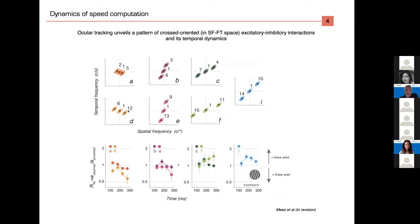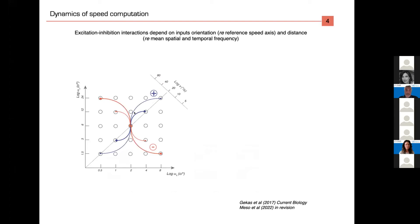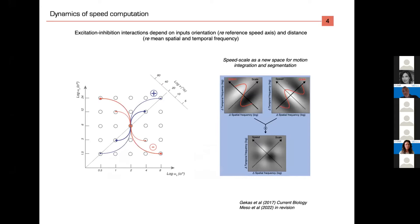To conclude: the pattern of interactions shows excitation along the iso-velocity line and inhibition anywhere else, depending on the angle of the stimuli and time — again, inhibition takes time. With Pascal Mamassian and students, we propose a new way of looking at this as a pattern of excitation and inhibition in the speed, spatial-temporal frequency space.